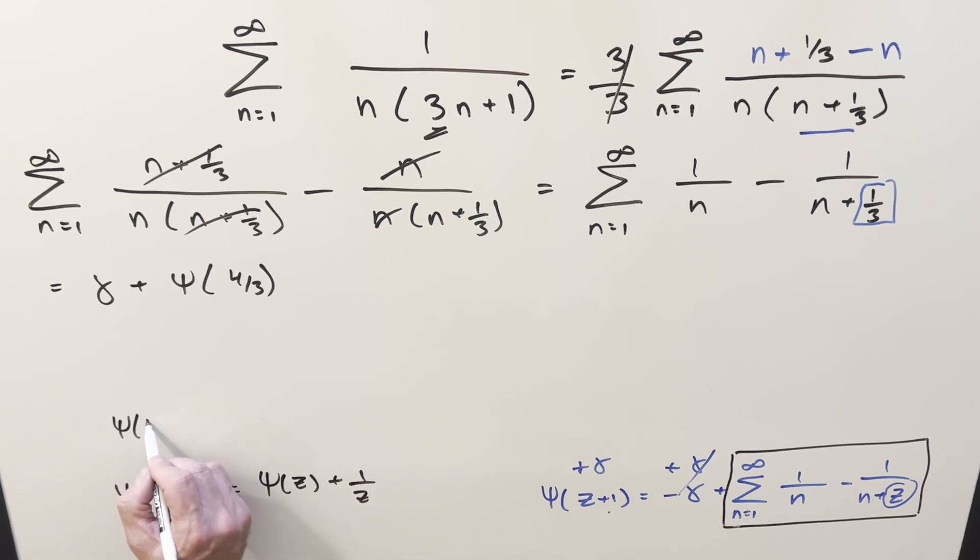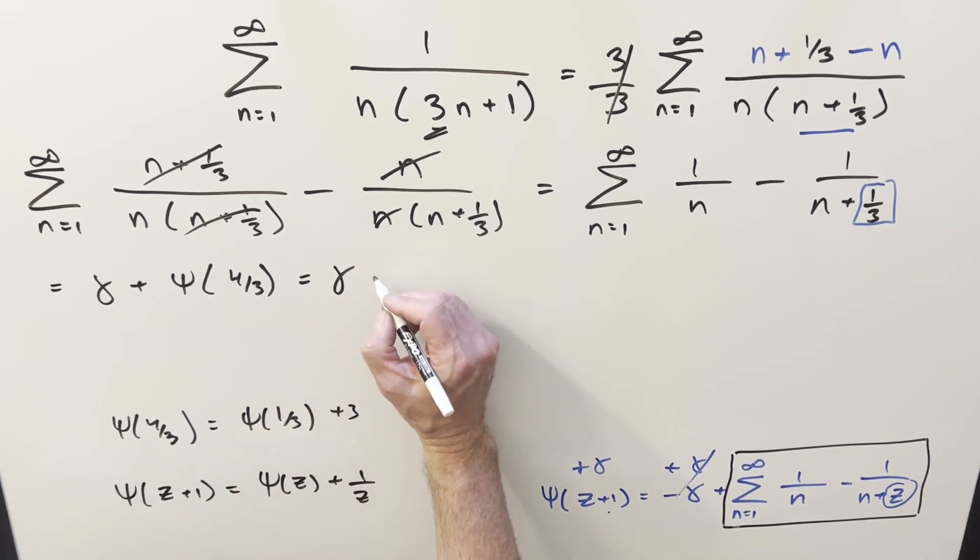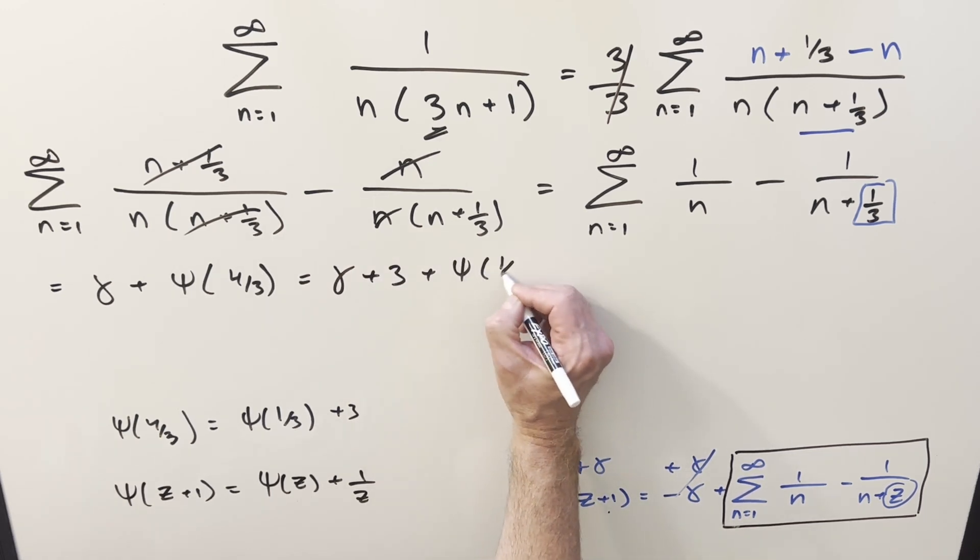But now let's just see if we can reduce this and clean up this whole thing. So for digamma of z plus 1, we can reduce this to digamma of z plus 1 over z. So for digamma of 4 thirds, I can write this as digamma of 1 third plus 1 over 1 third, which is just going to be a 3.